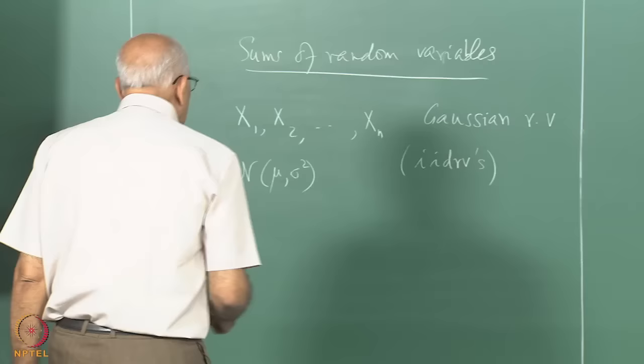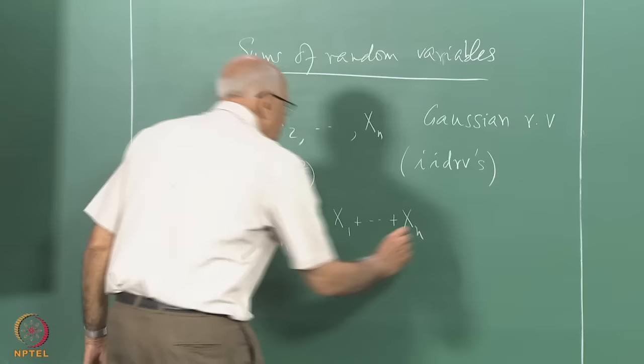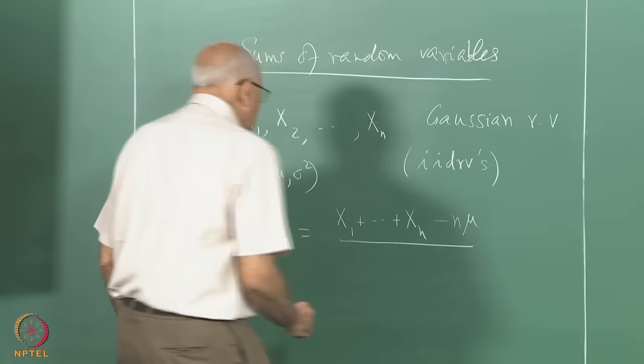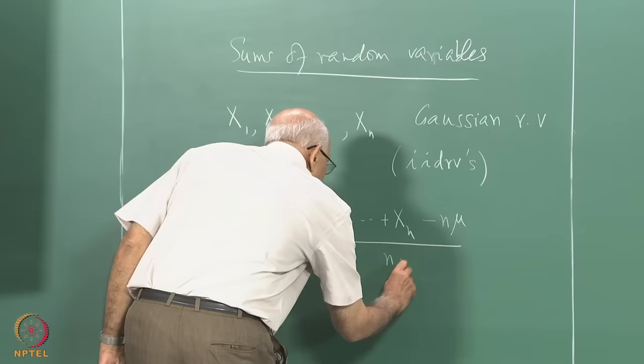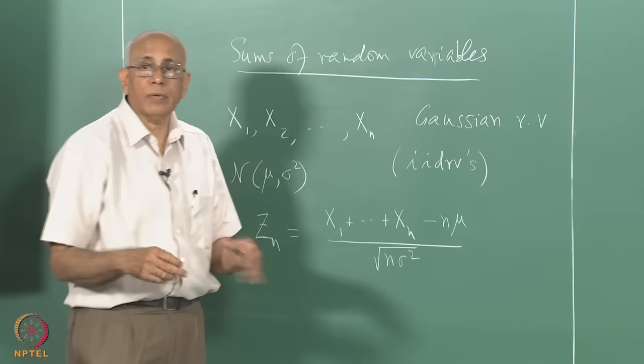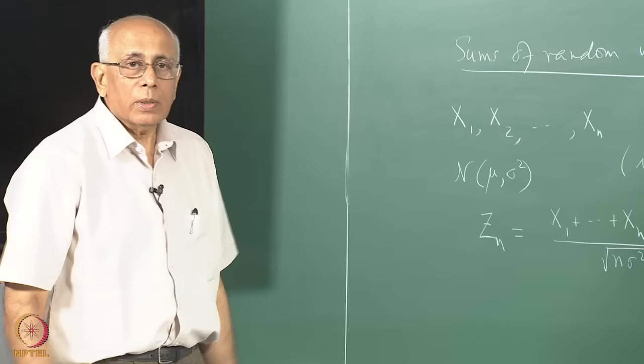The question is: what is the distribution of a variable z_n, defined as x_1 plus ... plus x_n minus n times the mean, divided by the square root of n sigma squared? Here sigma is the standard deviation for each variable, and n sigma squared is the sum of the variances, since the variances of independent random variables add.